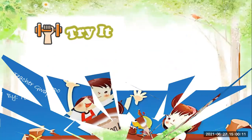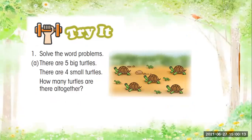Now let's try it. Number one — remember, first we will read the story and understand it. That's step number one. So let us read: there are five big turtles, there are four small turtles. How many turtles are there all together? Step number one, we need to read.